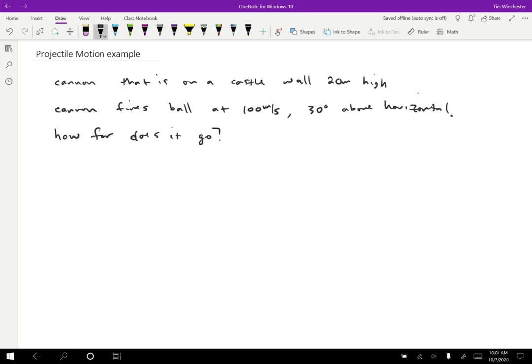So I'm going to begin with a sketch. So we have here's the castle wall, which is 20 meters tall. The cannon is going to fire a ball like this at 100 meters per second. And the angle here is 30 degrees. So what we want to know is after this ball lands, what is this distance that it went? So there's a very ordinary kind of example.